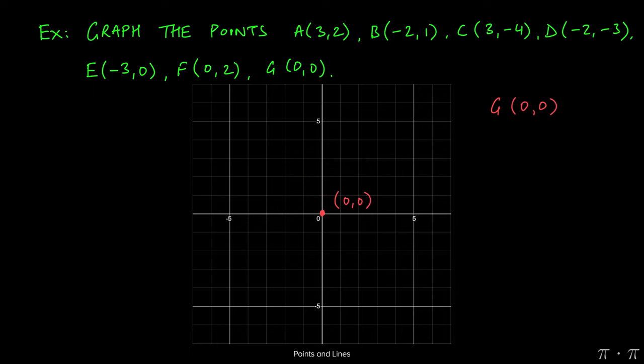Lastly, the origin, the letter G, is just (0,0). That means you stay right at the beginning, and you don't move left or right or up or down.